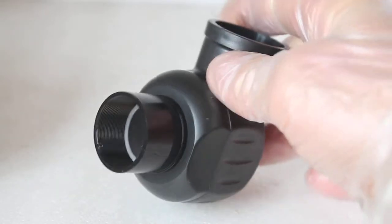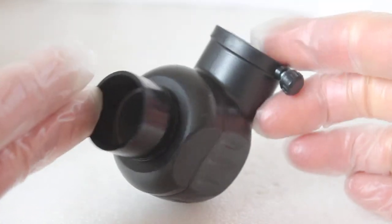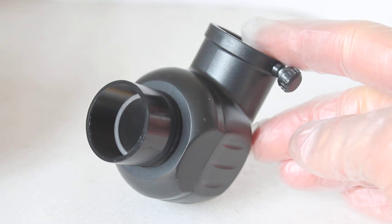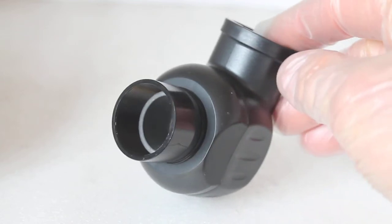What does that do? Well, with a standard 90-degree mirror diagonal, the image will be the right way up. This is for use with a refractor, by the way, or your Maksutov and your SCTs and Schmidt-Cassegrains.